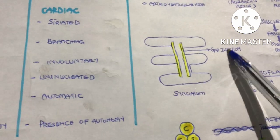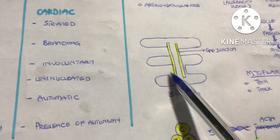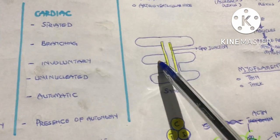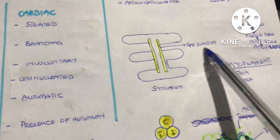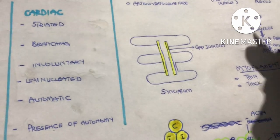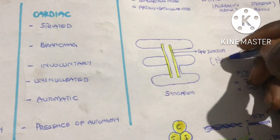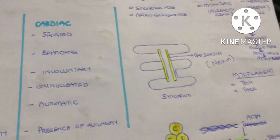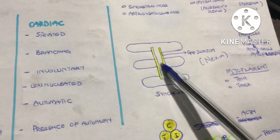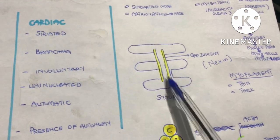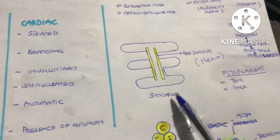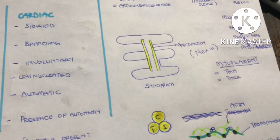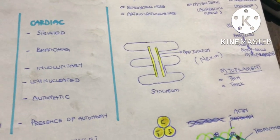The benefit of gap junctions: wherever there is an action potential in one smooth muscle cell, the gap junction allows it to travel to neighboring smooth muscle cells, causing all smooth muscles to contract at the same time — simultaneously.